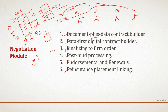The data-first digital contract builder is a tool that builds the insurance contract using the digital contract builder. As per the data-first capability, the contract is built using data from submission data, quote details, a rule engine, and selection from the clause library. The contract is built in a way that all compliance and regulatory-related changes and formalities are satisfied much earlier in the process.